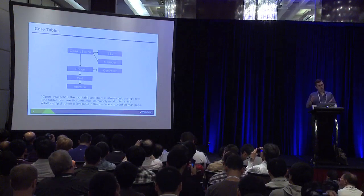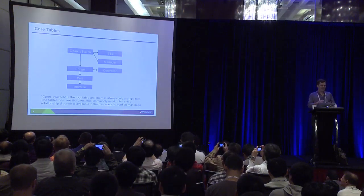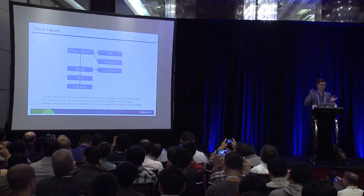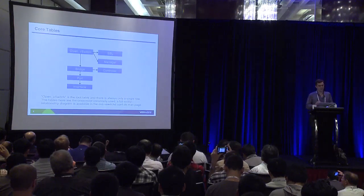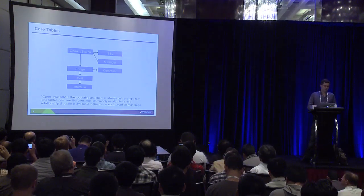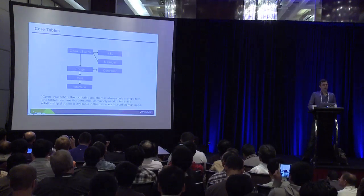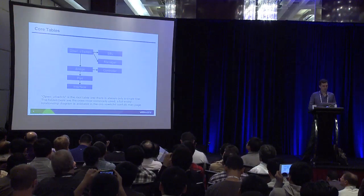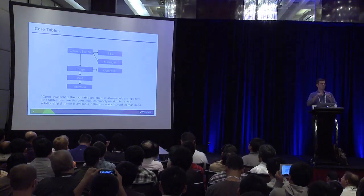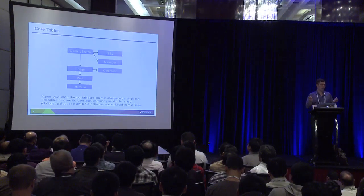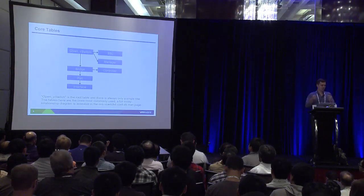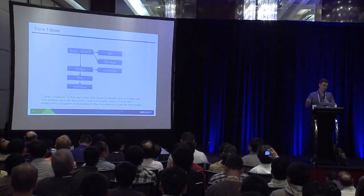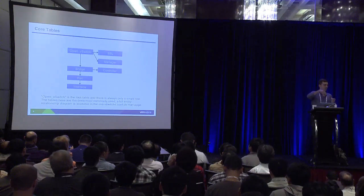The database consists of a number of tables. The main ones you usually interact with are highlighted. A full entity diagram is available in the OVS vSwitchd.conf.db man page. There is always an Open vSwitch table — it only ever has one entry — and it contains pointers to things like bridges. If you create a bridge, a new row will be added to the database. If you add a port to that bridge, the port will be added to the interface table and then linked to the port and then to the bridge.